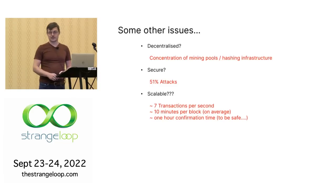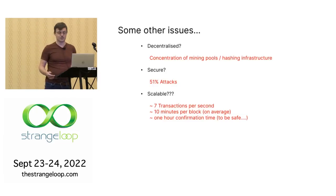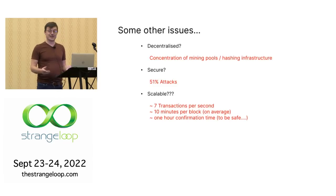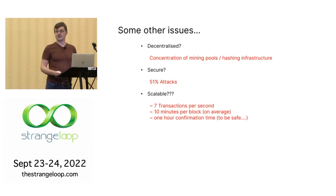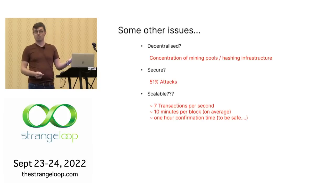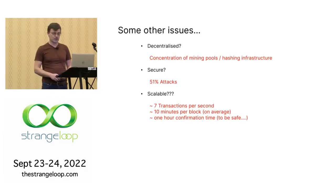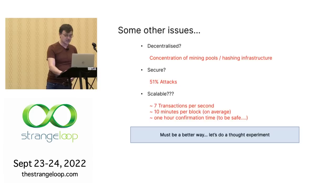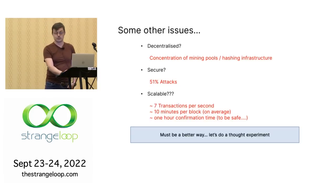It's certainly not scalable — you couldn't run a real global system on this. It takes about 10 minutes per block on average with about seven transactions per second. And because of the 51% risk, you can't simply take one block as confirmation — you have to wait several blocks until you're reasonably sure it's not going to change. So there must be a better way of solving the block ordering problem.